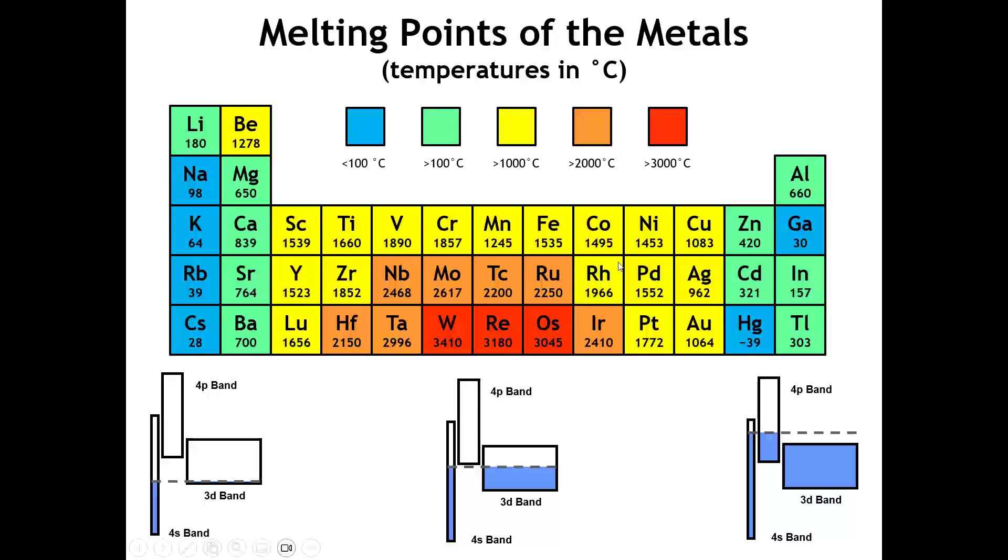Once we get into the transition metals, the melting points go up pretty rapidly, and they reach a maximum we see at group six, chromium, molybdenum, and tungsten. And that's because those elements have electron configurations where both the S and the D shell is halfway filled. And that's optimal for bonding. You know, it's no coincidence that in incandescent lights that the filaments are made out of tungsten because you can heat tungsten up to a really high level before it melts.